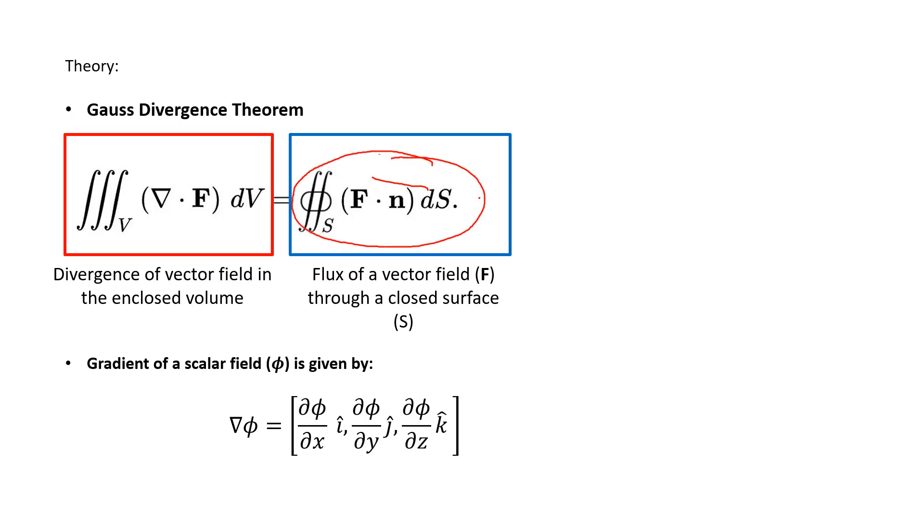This expression is given here where we have F dot n̂ dS, which is the flux of the vector field through a closed surface, is equal to del dot F dV, which is the divergence of that same vector field through some enclosed volume.